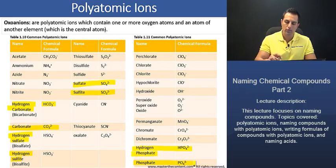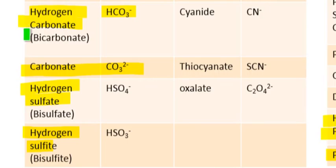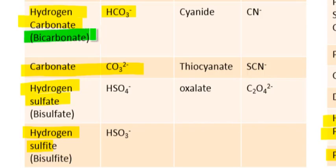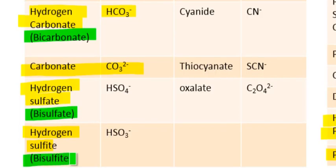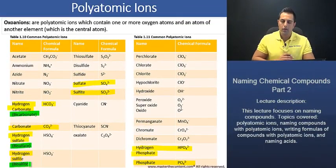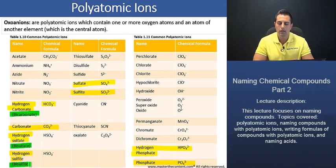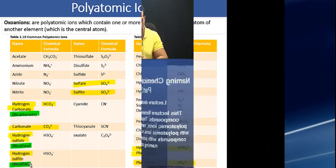Additionally, we should note that instead of writing 'hydrogen', the prefix 'bi' is just given. So instead of writing hydrogen carbonate, you may also see it written as bicarbonate. Instead of hydrogen sulfate, you may see it written as bisulfate, and so on with bisulfite. Now that we've taken a look at the names of the common polyatomic ions, let's go ahead and see how we would name compounds containing polyatomic ions.